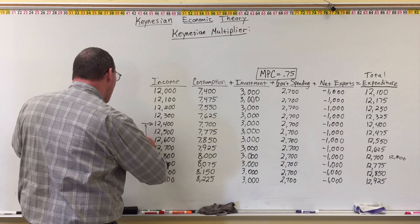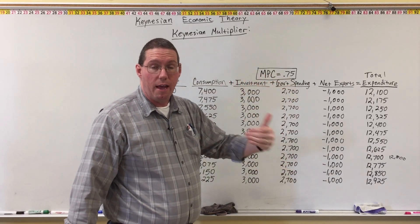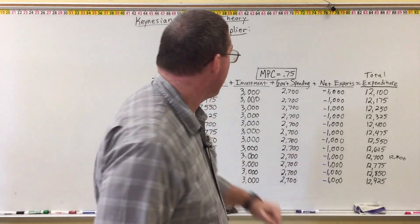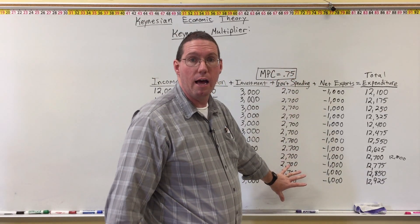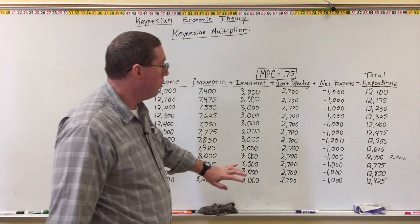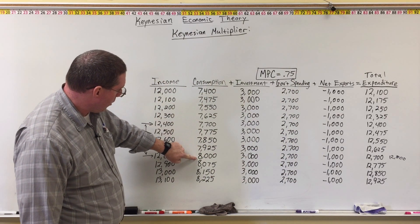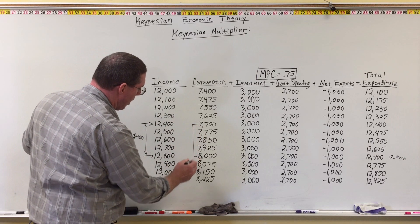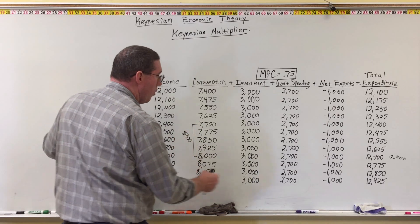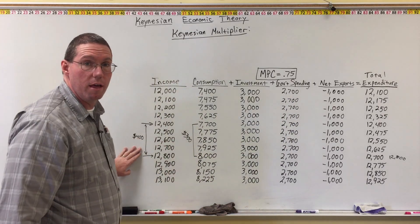Then the question came up: why did that happen? Why did we have an increase of 400 billion instead of only 100 billion? The answer was the increase in government spending triggered a whole bunch of spending in consumption. Because the government spent more money in the economy, that triggered consumers to also go out and spend a lot of money. Even though there was only a 100 billion dollar increase in government spending, consumption went from 7,700 up to 8,000 — a 300 billion increase. So a 100 billion increase in government spending plus a 300 billion increase in consumption gave us a total 400 billion increase in GDP.